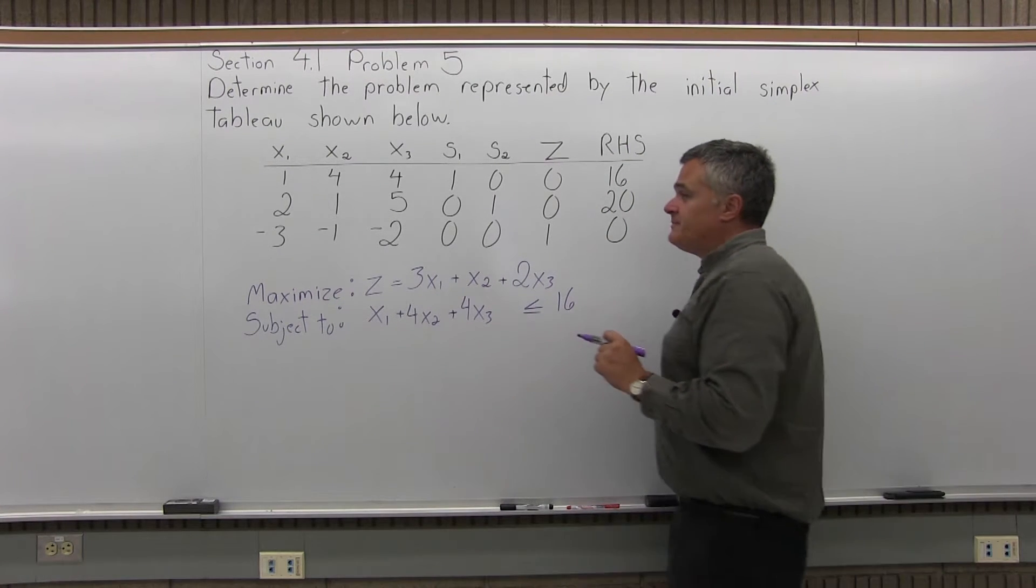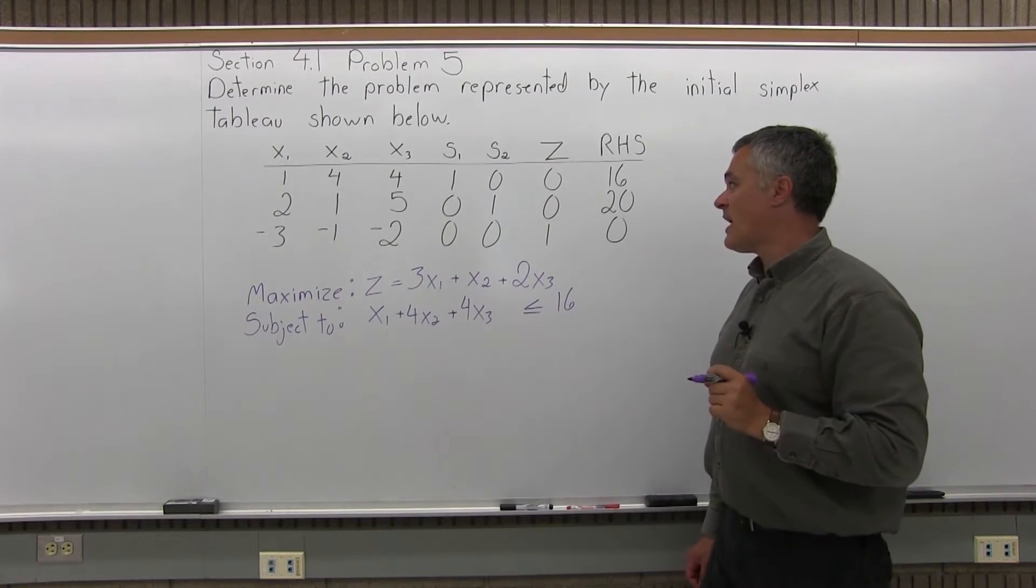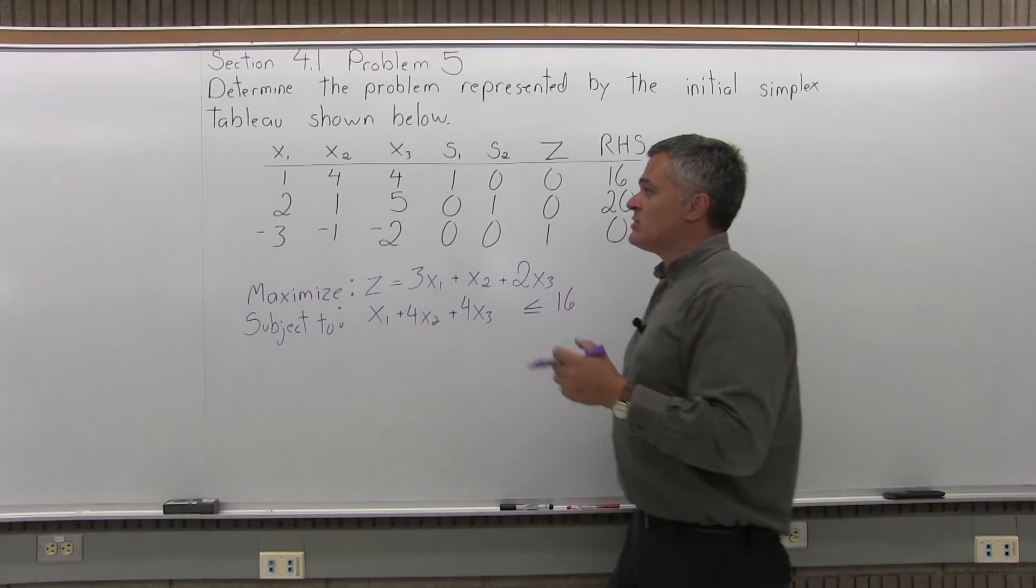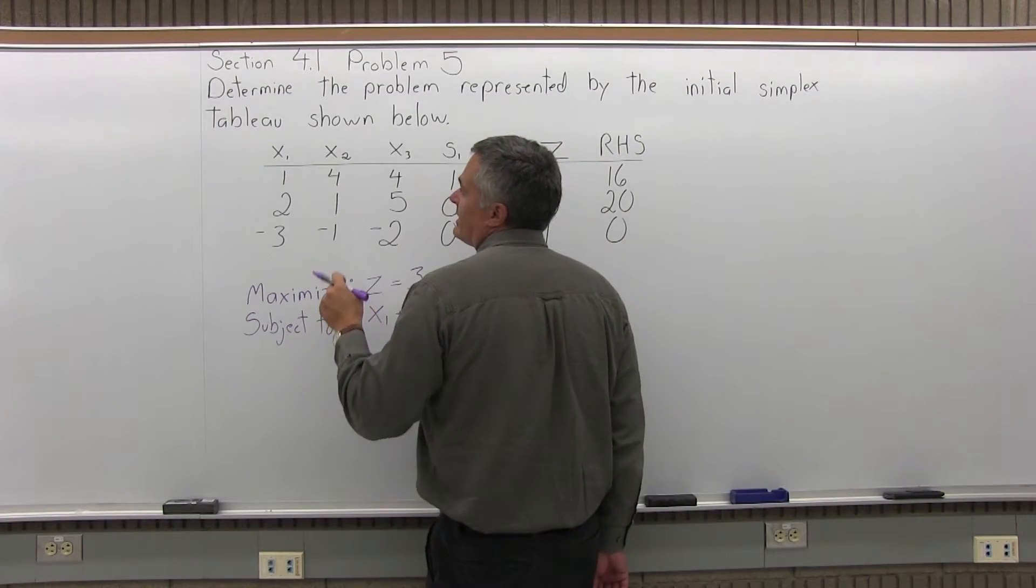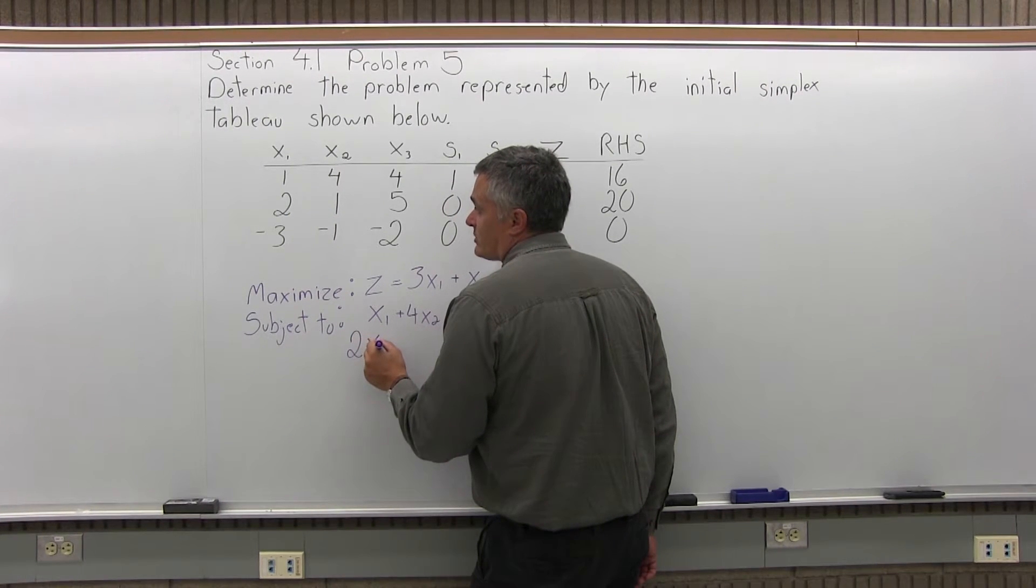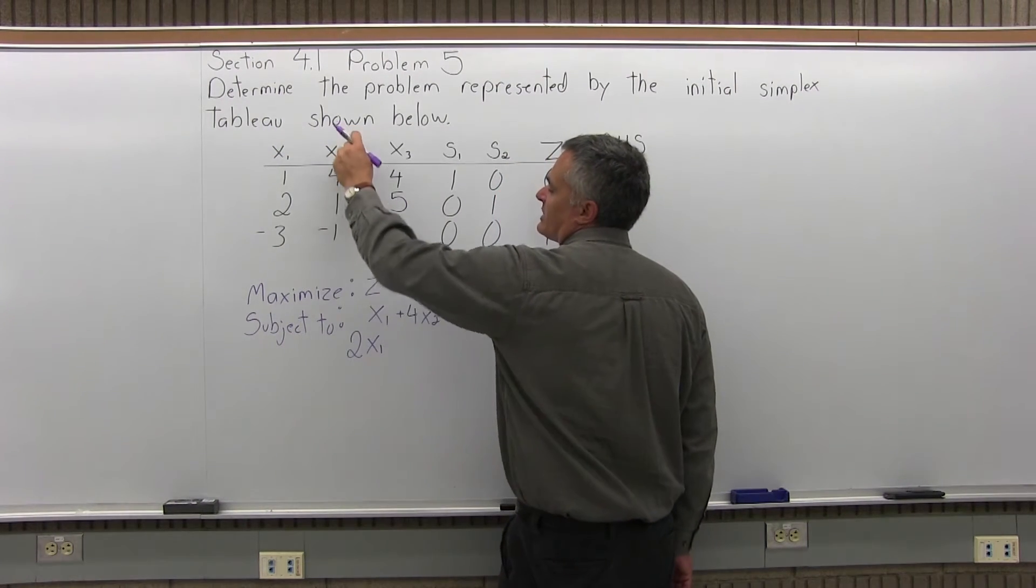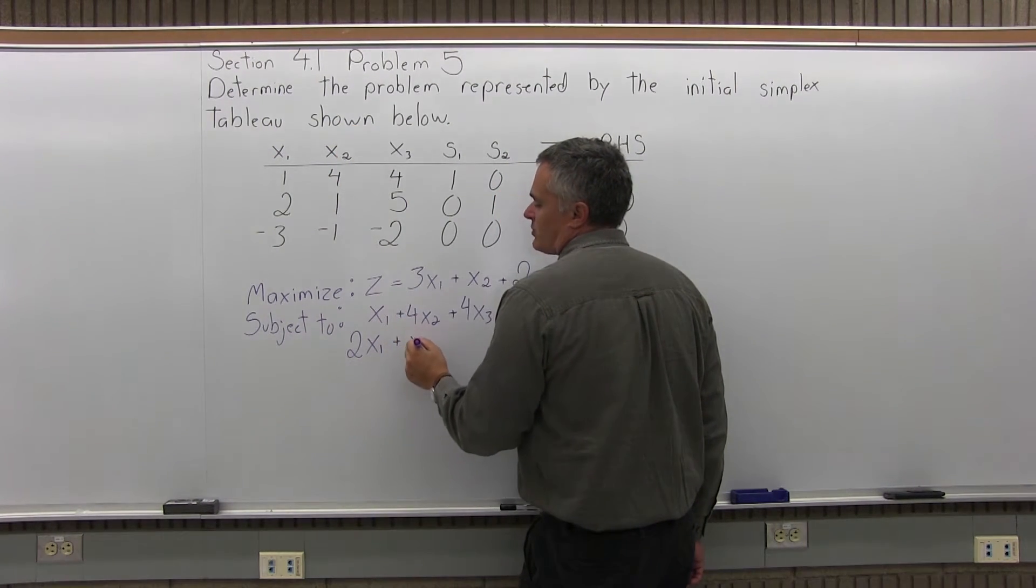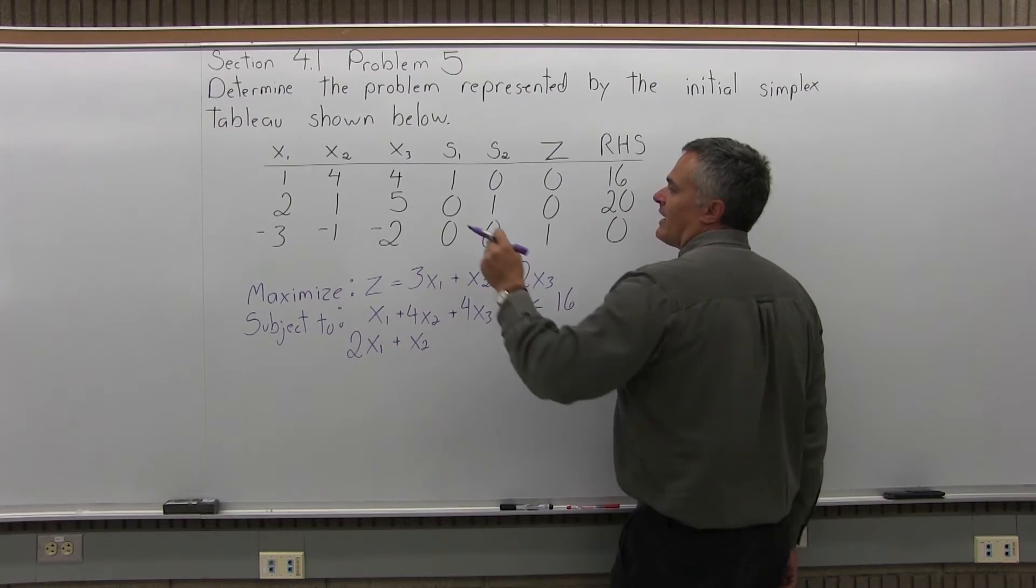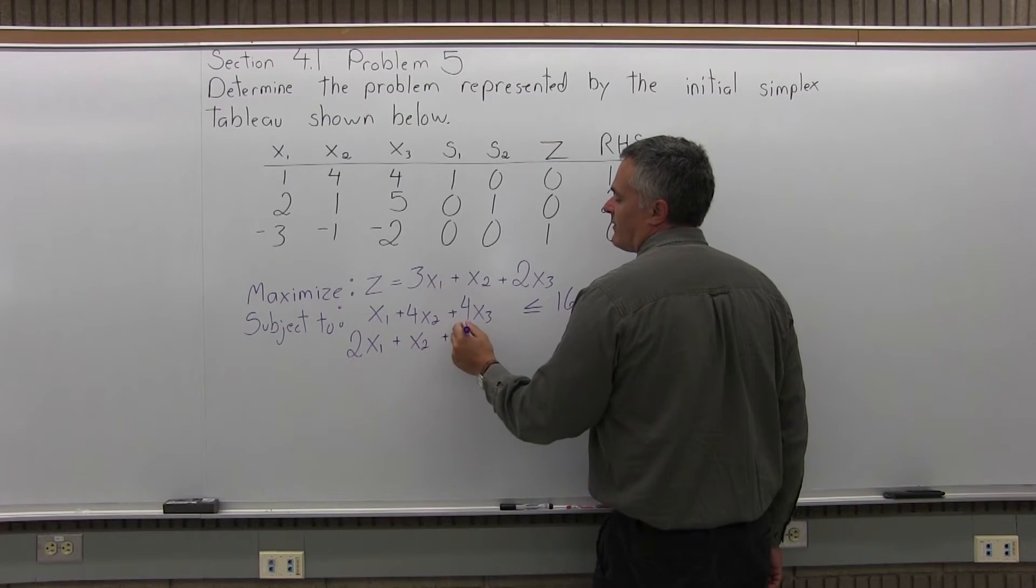So now, I have a second row in my initial simplex tableau, which is 2, 1, 5, 0, 1, 0, 20. That's a different constraint. So the 2 in that middle row is in the X1 column. It would have come from 2X1. Then I have 1 in the X2 column, that would have come from plus 1X2, or just X2. And then in the middle row, I have a 5 in the X3 column, that would have come from 5X3.